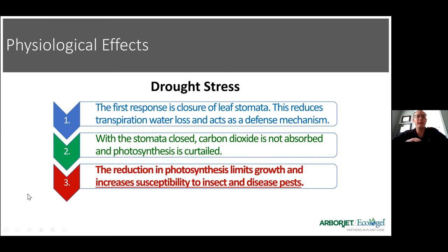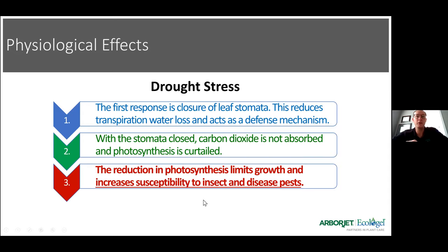The first response of a plant under drought stress is closure of leaf stomata, which reduces transpiration water loss and acts as a defense mechanism. Transpiration is essentially the way a plant cools itself down. With stomata closed, carbon dioxide can't be absorbed and photosynthesis is curtailed. Since all of a plant's energy comes from photosynthesis, when that starts shutting down we really start seeing the problems — leaf drop, brownness. The reduction in photosynthesis limits growth, meaning the plant can't grow out of those problems like it normally would, and it increases susceptibility to insects and disease pests.